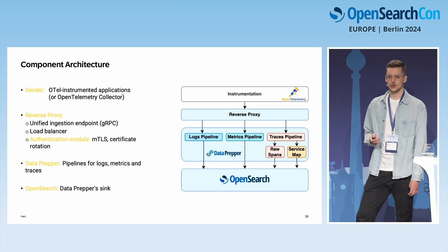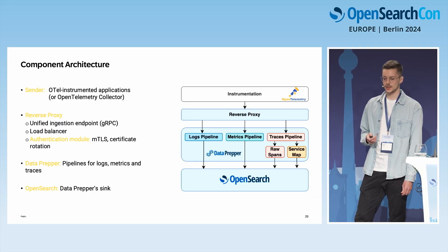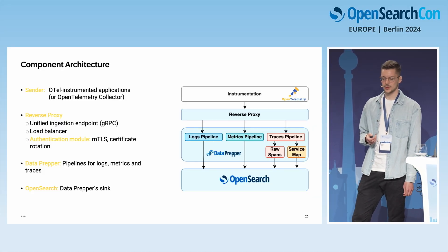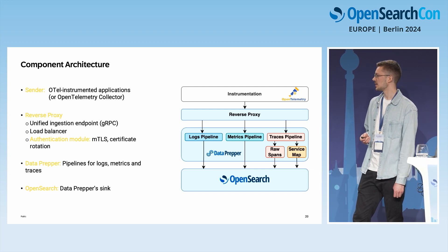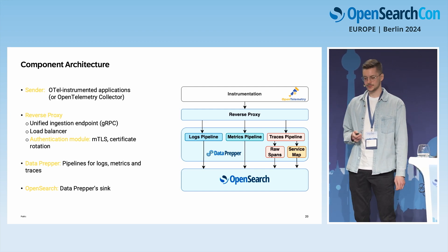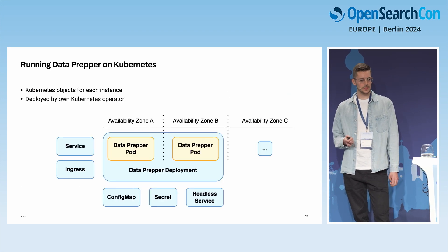The reverse proxy also integrates with our internal security module, allowing us to secure it with Mutual TLS as well as managing certificates and performing certificate rotations. On the client side, it can be any OpenTelemetry-instrumented application or the OpenTelemetry Collector, all targeting this unified ingestion endpoint.